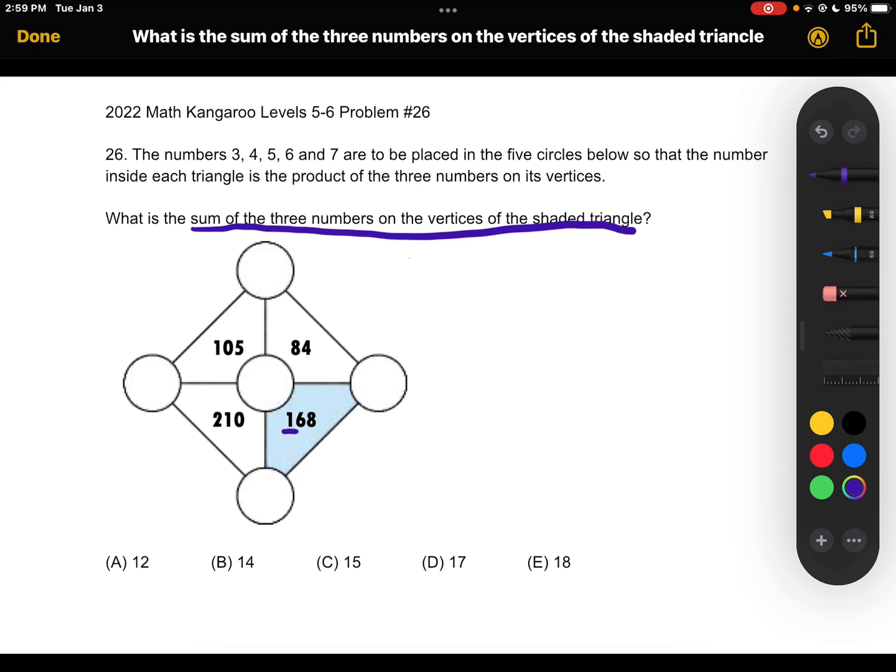So the shaded triangle has 168 in it and we know that the number inside each triangle is the product of the three numbers on its vertices.